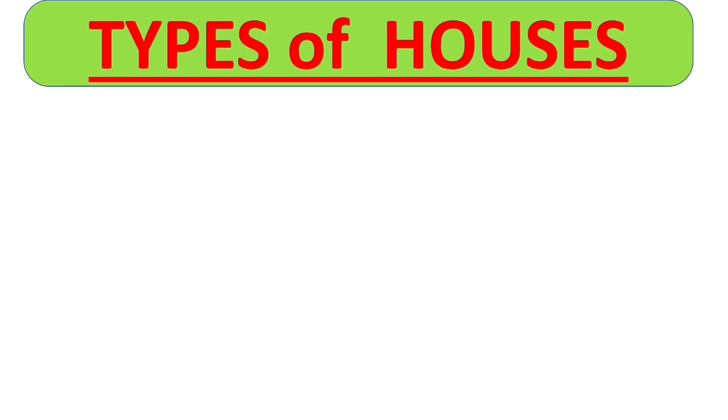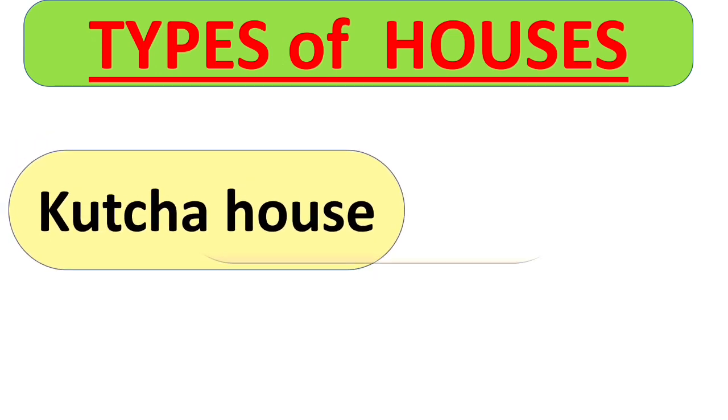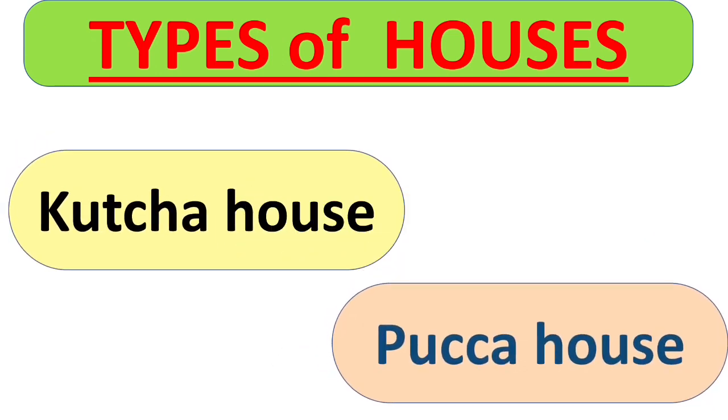Okay kids, can you tell me different types of houses? There are mainly two types of houses. They are Kaccha house and Pakka house.